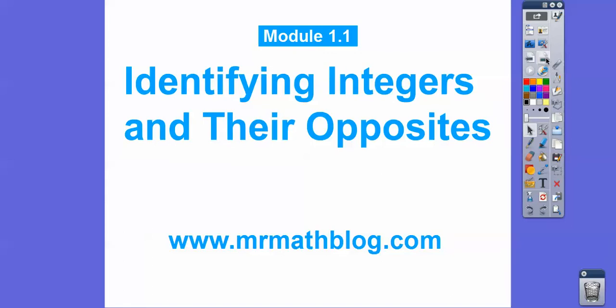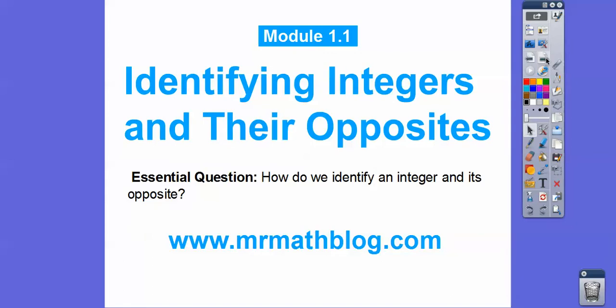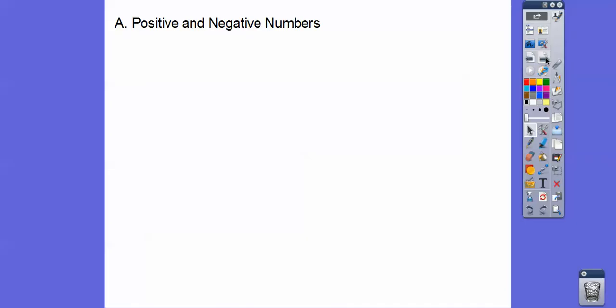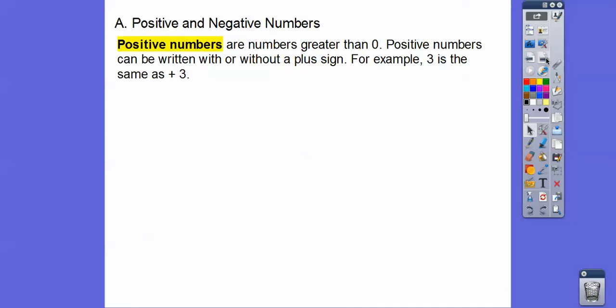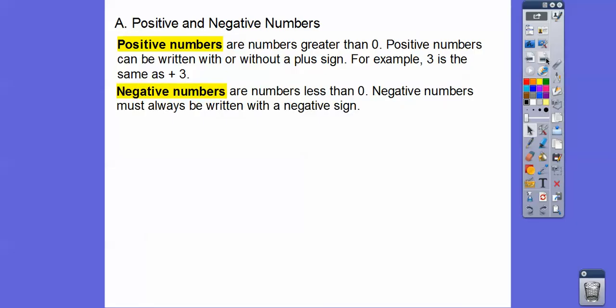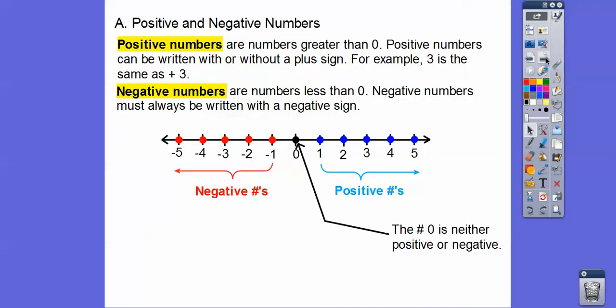Let's go ahead and get started. Our question is: how do we identify an integer and its opposite? So, positive and negative numbers. Positive numbers are numbers that are greater than zero, and they can be written with or without a plus sign. For example, three is the same as plus three. Negative numbers are less than zero and must always be written with a negative sign. Here's a number line — here are the negative numbers, and here's zero.